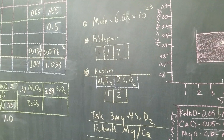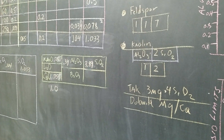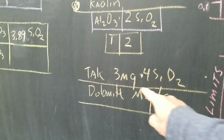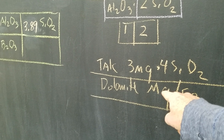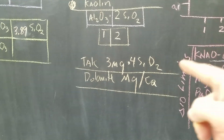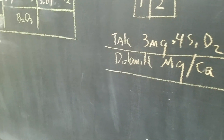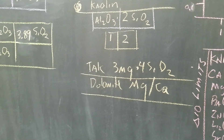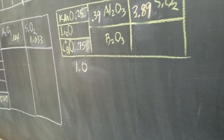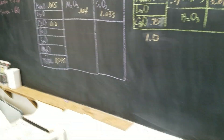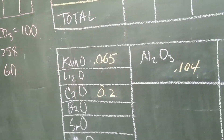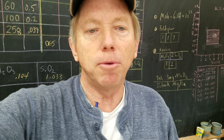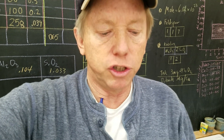Some other things to keep in mind: talc supplies three magnesium and four silica; dolomite supplies one magnesium and one calcium, though it can vary — like 0.48 magnesium and 0.52 calcium — since it's a variable material. You have to be familiar with all the oxides. Tomorrow I'll work on more about limits and the Stull chart.